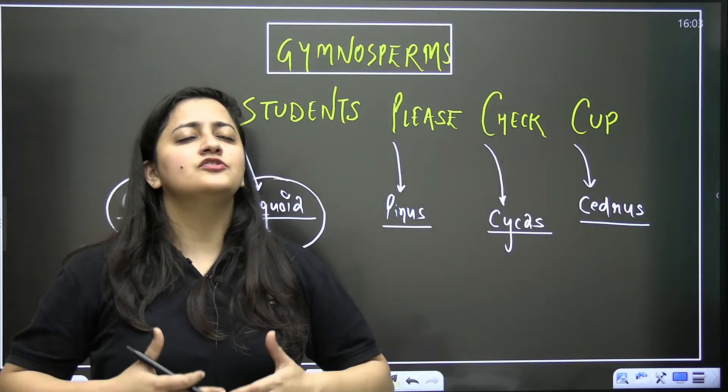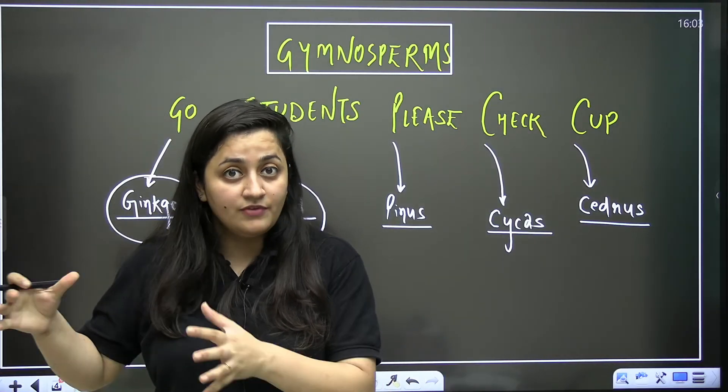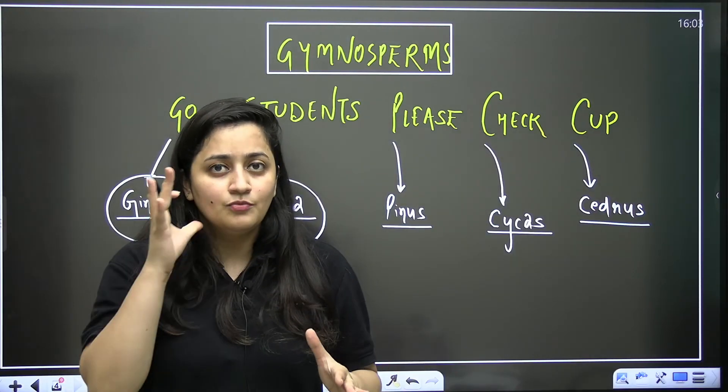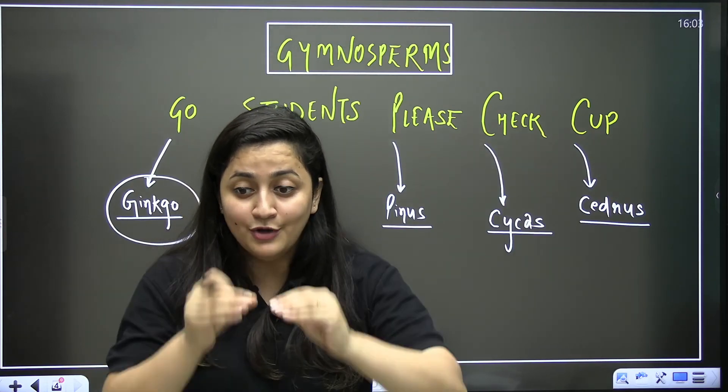When you talk about angiosperms, flowering plants, we have so many examples. That's all about the tricks of the plant kingdom. Watch this video again and again and revise the examples. I'll come up with more trick videos. Do like, do share, do subscribe, and put it in the comment section.